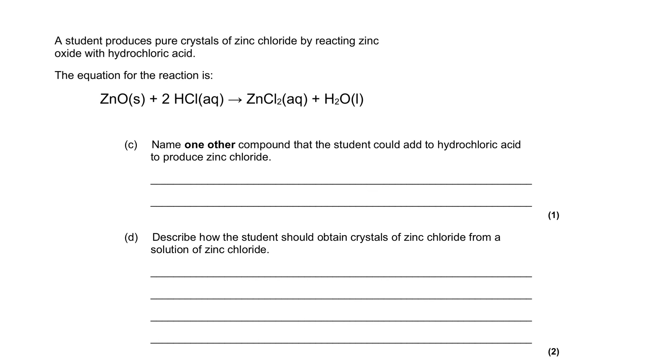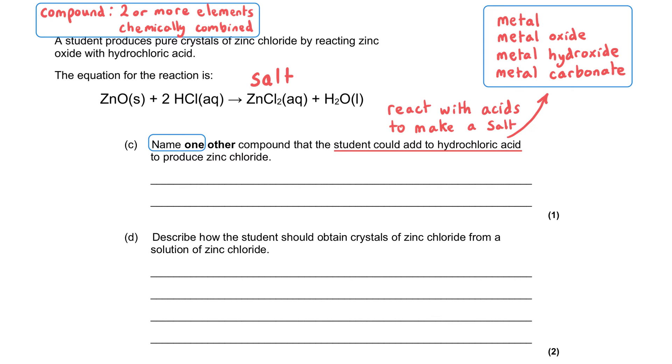As a follow-on for the same reaction, we are asked to name one other compound that the student could add to hydrochloric acid to produce zinc chloride. Things that will react with acids to make salt are metals, metal oxides, metal hydroxides, and metal carbonates. We have a list of four possible chemicals. We've been told we are selecting a compound, so that rules out the metal option.